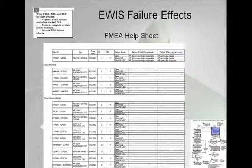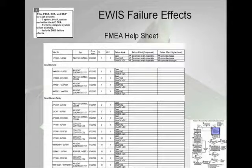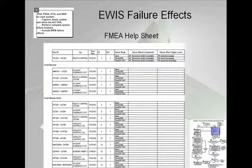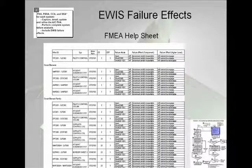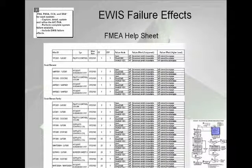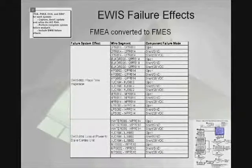Seen here is one of the output sheets provided by the EWIS RAT. A particular wire is selected, and all of the wire segments directly connected to it — defined as part of its circuit element — are listed immediately below it. Those wires defined as part of the circuit element family are listed in the block below. This allows for a systematic process for a system safety engineer to define the failure modes of each of the wires, enabling a consistent propagation of failure definitions throughout the system.